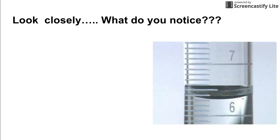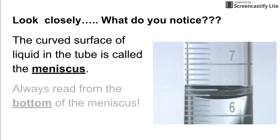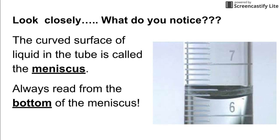If you look closely you would see that the water is curved and it dips down. There's a special name for this. The name of the curved surface of the liquid that's in a tube is called the meniscus. Now when you're reading a graduated cylinder it's important to always read the graduated cylinder from the bottom of the meniscus.